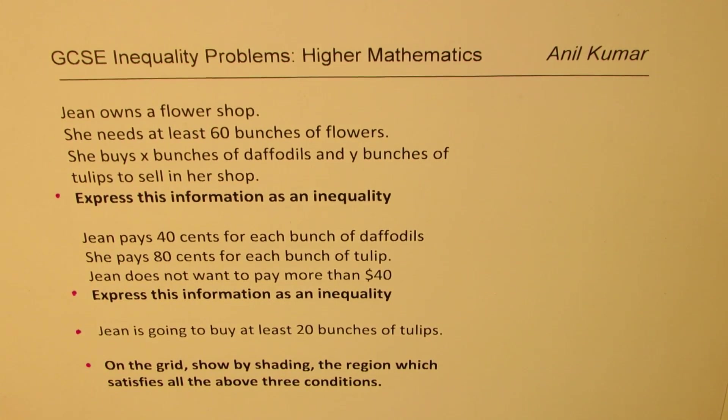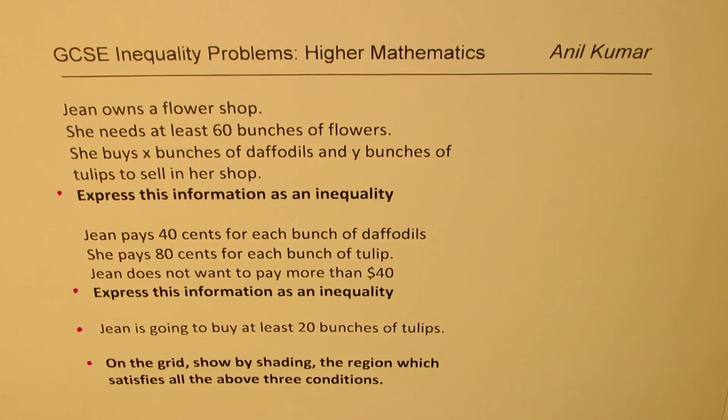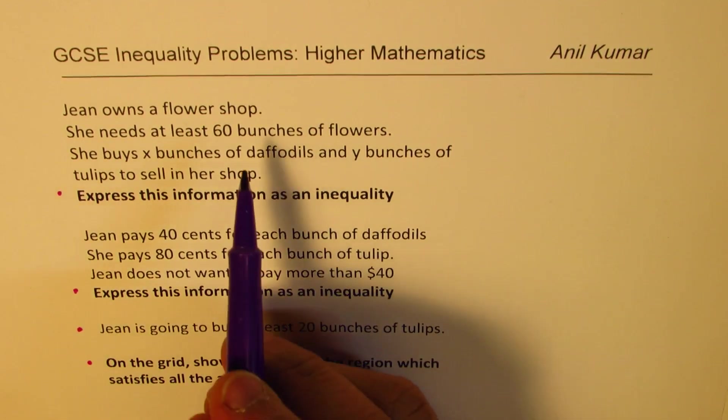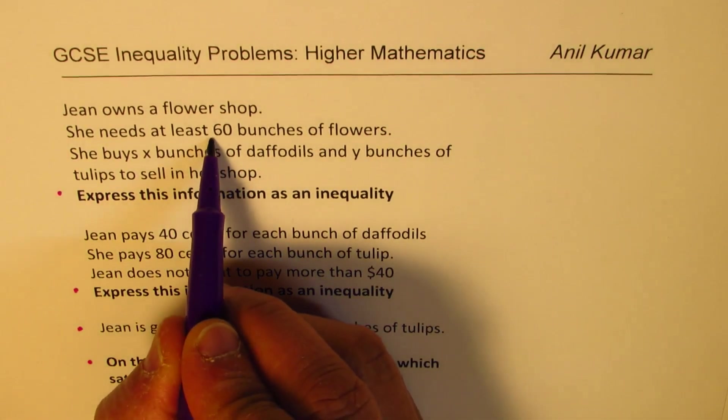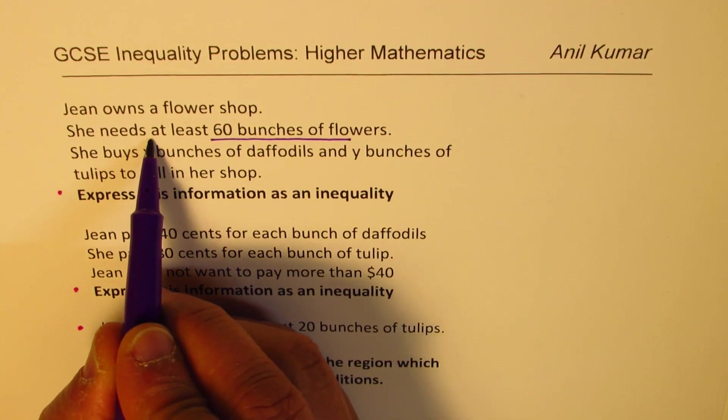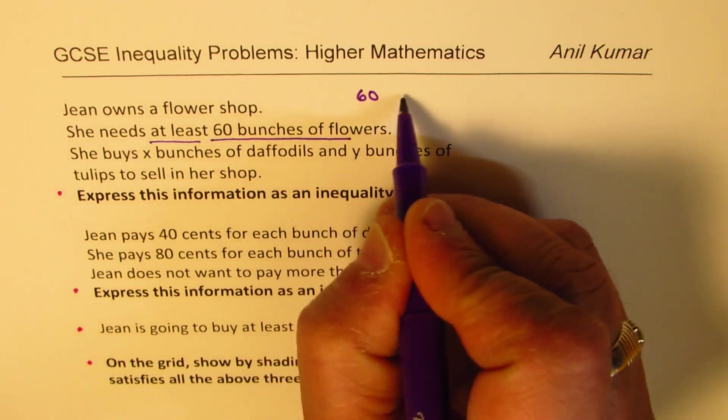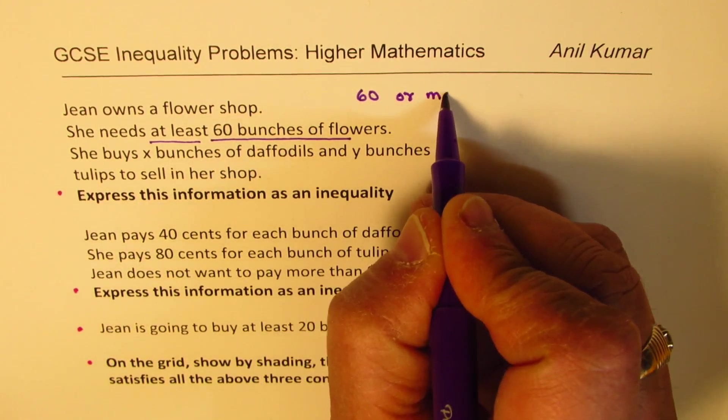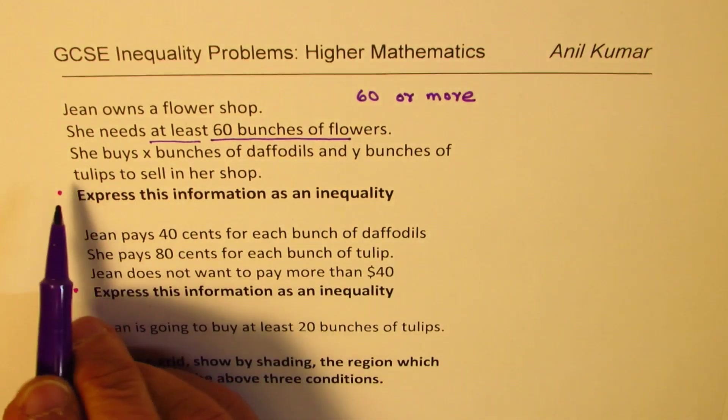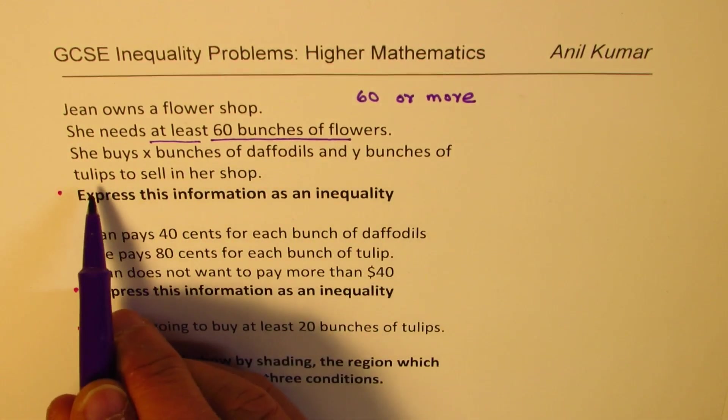So let's look into these one by one. The very first one gives us a condition that Jean is going to have two types of flower bunches and total is 60. Total is at least 60, means 60 or more.